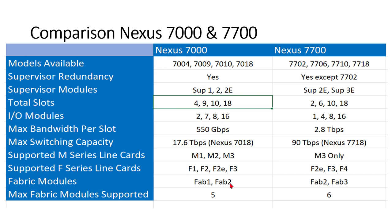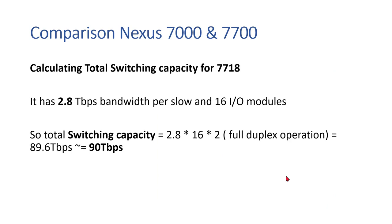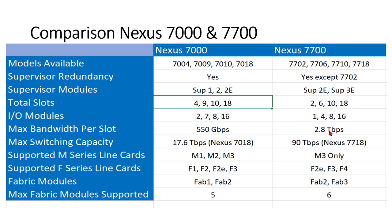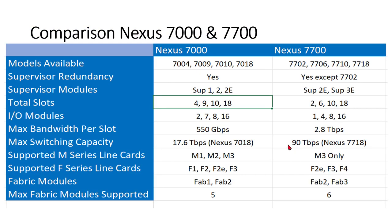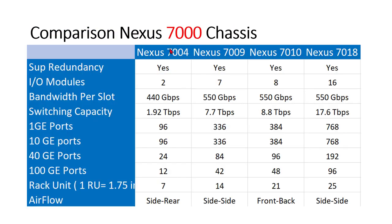Up to five fabric modules can be used in a 7000 series chassis for best performance, while six can be used in the 7700. To calculate total switching capacity, take the 7718 as an example: it has 18 total slots, so 16 are I/O modules. Each module is capable of 2.8 Tbps. Multiply 2.8 by 16 and then by 2 for full-duplex operation, and you reach approximately 89.6 Tbps, which rounds to 90 Tbps.